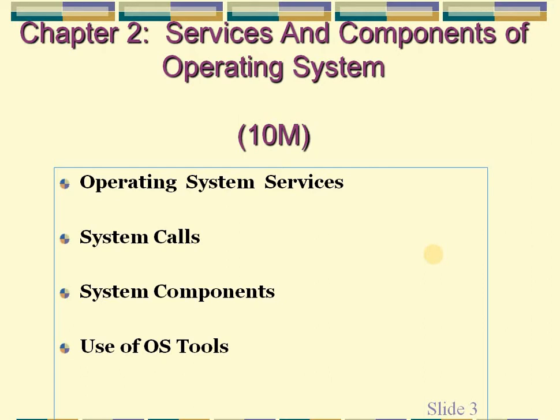In the previous lecture, we learned about our first unit — overview of operating systems — in which we studied what is an operating system, their components, architecture, different components, and various operations. After that, we studied different types of operating systems and their architecture. Now today onward we are going to start our second unit, that is Services and Components of Operating System, which carries 10 marks for the exam.